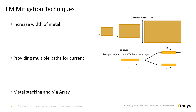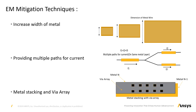Metal stacking and via array: if there is a large amount of current flowing through M1 and we do not have any parallel paths, we can use the metal above, M2, to create a stack of M1 and M2 and connect them with via arrays. This will also fix the EM violation as it helps in dividing the current. However, metal stacking takes up a lot of routing tracks to implement and is only recommended when we have sufficient area, such as in analog designs.